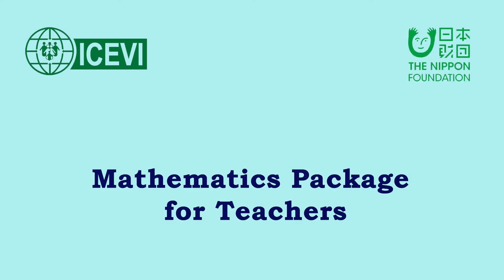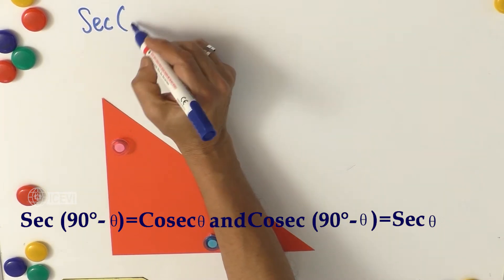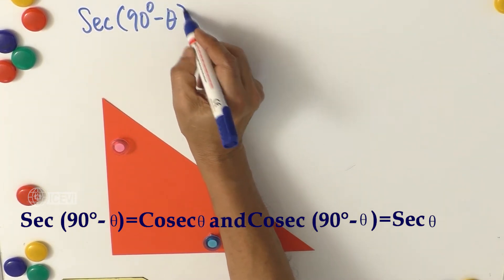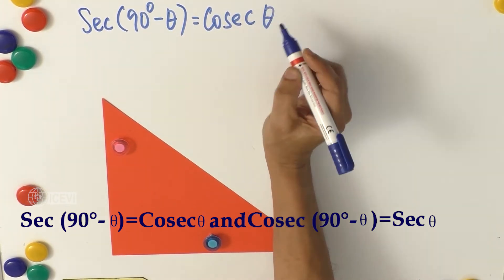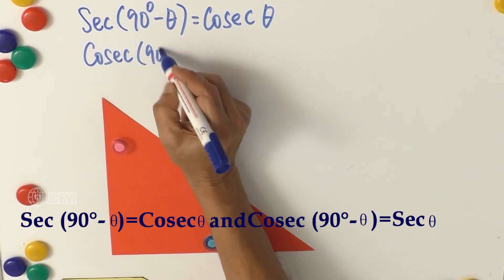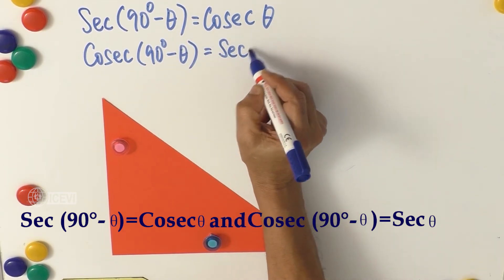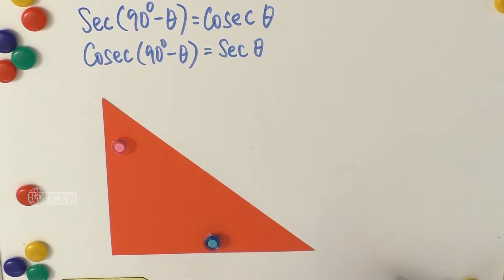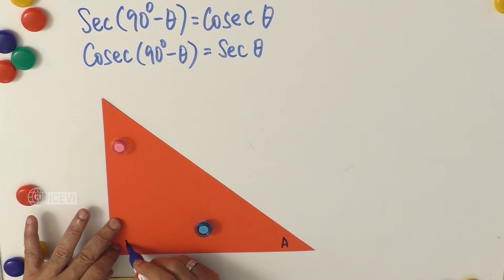This is the ICBI Nippon Foundation mathematics package for teachers. The title of this video is: proving secant(90° minus theta) equals cosecant theta, and cosecant(90° minus theta) equals secant theta.